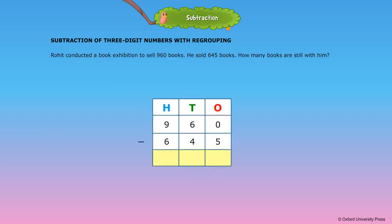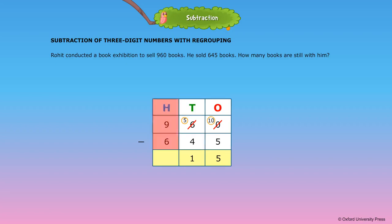Subtract the digits in the ones place. As the number to be subtracted is bigger in the ones place, we need to regroup. 6 tens and 0 ones is equal to 5 tens and 10 ones. 10 ones minus 5 ones is equal to 5 ones. Subtract the digits in the tens place: 5 tens minus 4 tens is equal to 1 ten. Subtract the digits in the hundreds place: 9 hundreds minus 6 hundreds is equal to 3 hundreds. Thus, 315 books are still with him.